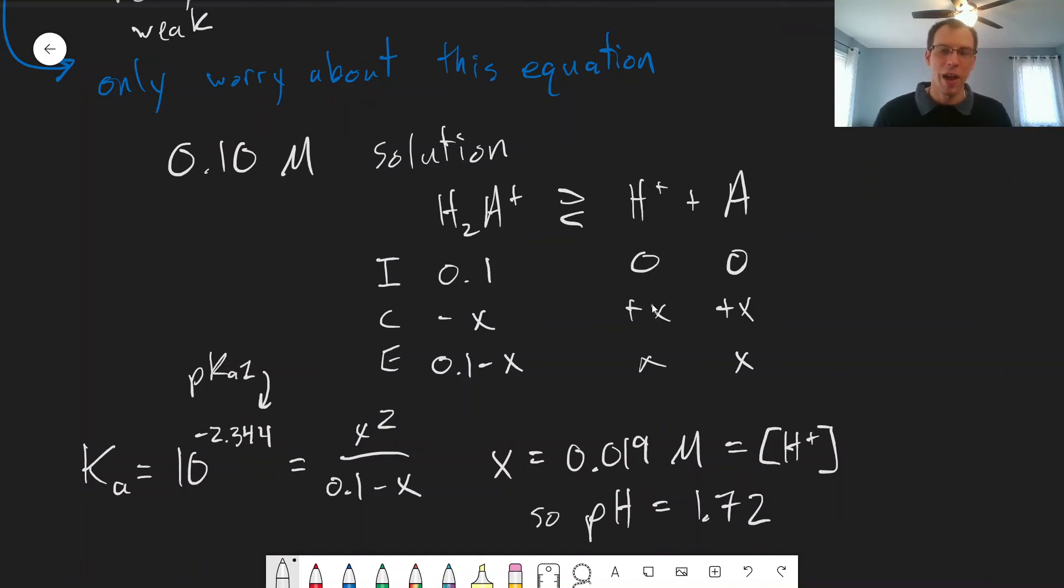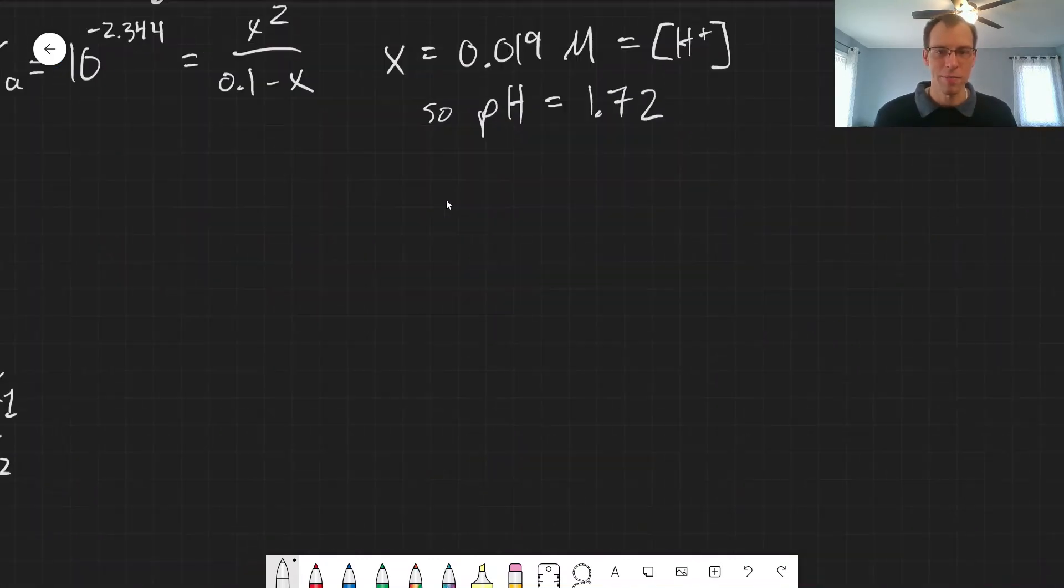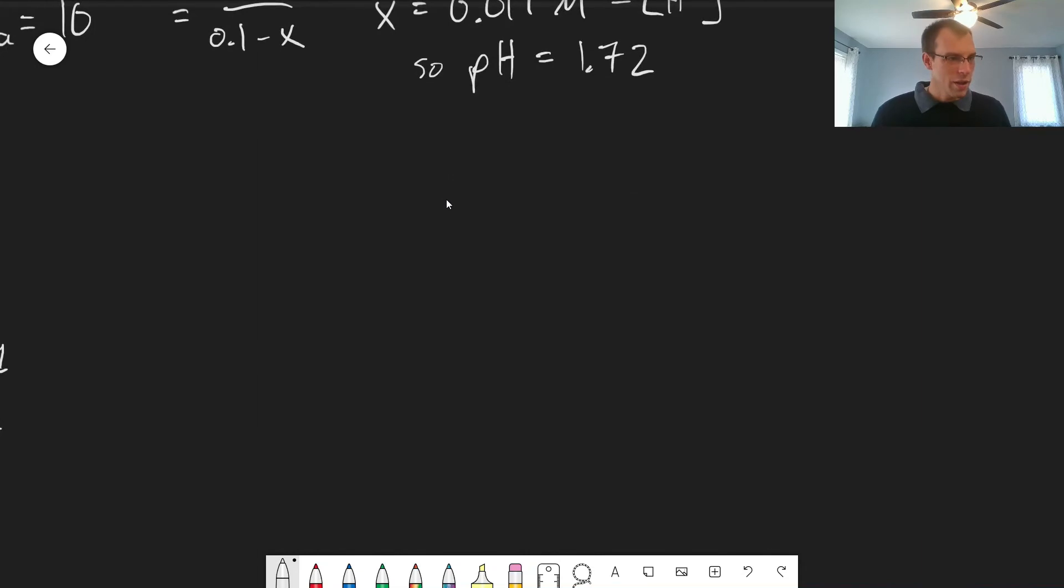Let's think about what happens in that second equilibrium and were we justified in ignoring it to find the H plus concentration. So one other way of saying that is, what's the concentration of A minus?